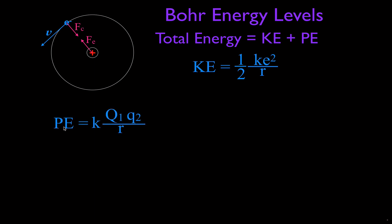The equation for potential energy is K times the magnitude of one charge times the magnitude of the other charge, divided by r (not r squared). Substituting e for the charges, the potential energy equals minus ke² divided by r. The negative sign arises because when two opposite charges are infinitely far apart, potential energy is zero, and as they come closer together, the potential energy decreases — so the negative sign indicates it becomes lower as the charges approach each other.